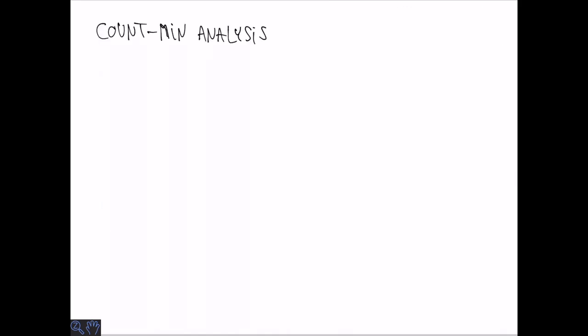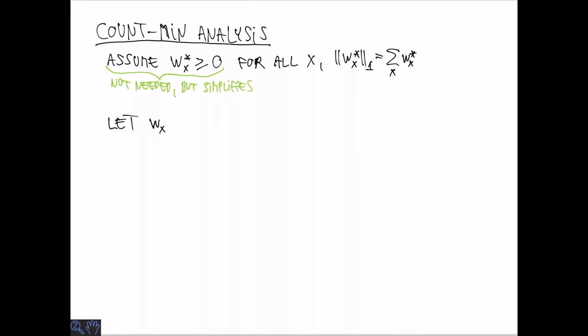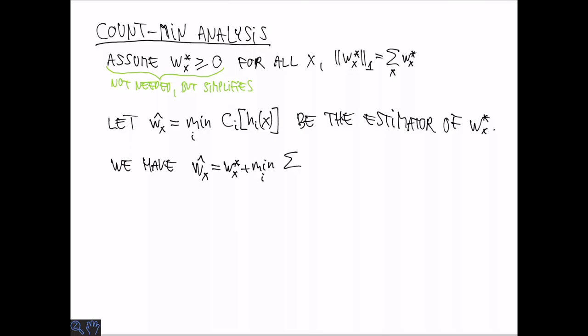Let's analyze the accuracy of the count-min sketch. We are going to assume that all the true weights are non-negative. So that is the L1 norm is actually equal to the sum of the true weights. So this assumption is needed for the simple estimator but it's not needed in general. It is possible as we will discuss later to have an estimator even without this assumption. Now we define W_X hat to be the estimator of the true weight and we want to bound the difference between W_X hat and W_X star the true weight. And as we argued earlier one is equal to the other plus all of these noise terms. And since all the noise terms are non-negative this is clearly always going to be an overestimate by our assumption.